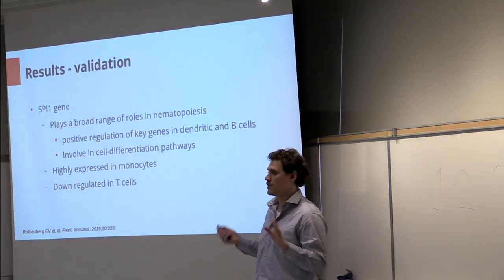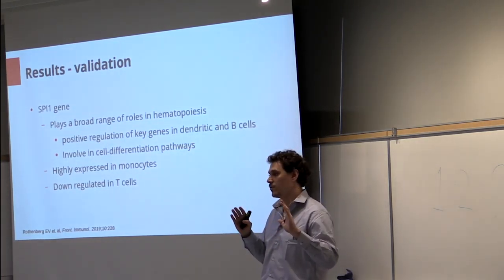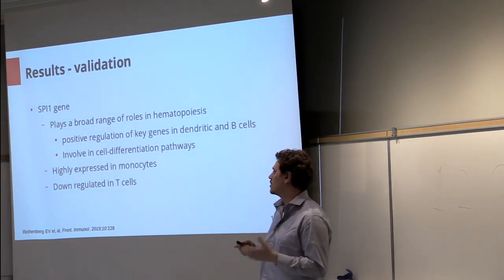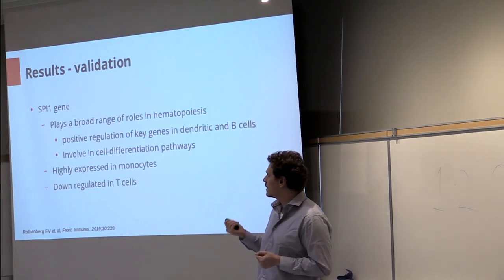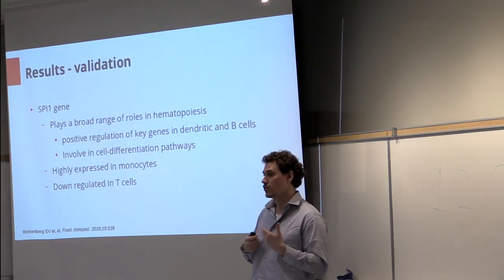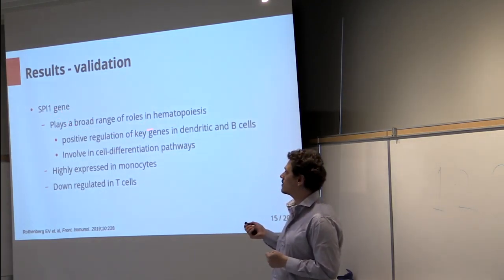So to validate these results we performed this analysis on 70 different cell ontology terms from the cell ontology. Validating these results is a bit tricky, so what we do to validate some of our results is we look in the literature at genes that are known to be lineage specific.